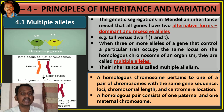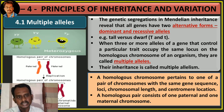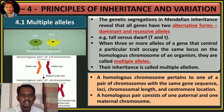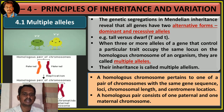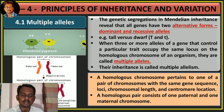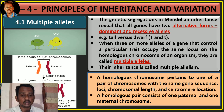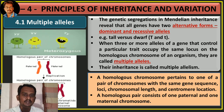Sometimes three or more alleles of a gene control a particular character. For alleles, one character is controlled by two different forms of the gene — dominant and recessive. But sometimes a single character may be controlled by more than two alleles. That is called multiple alleles.